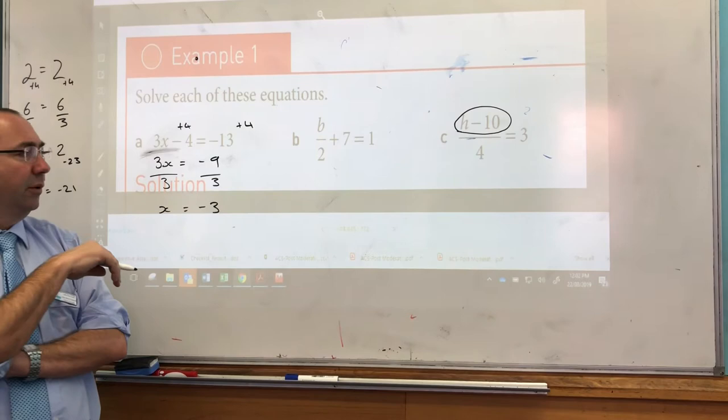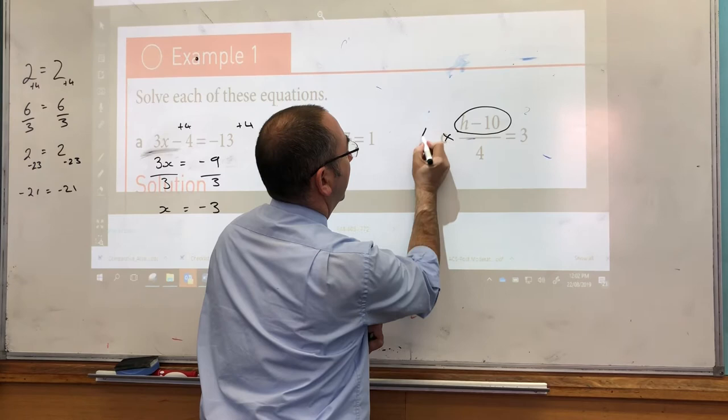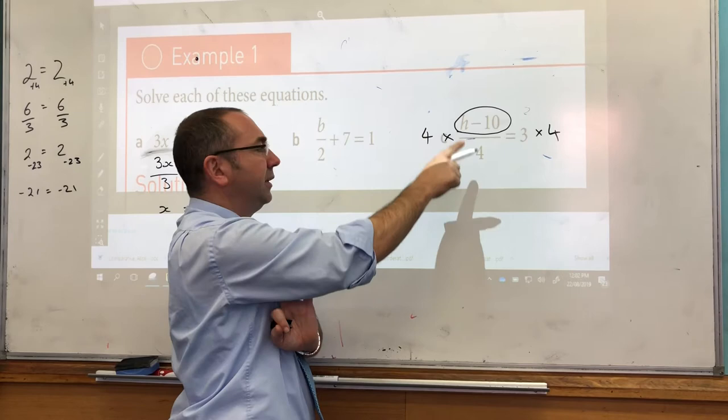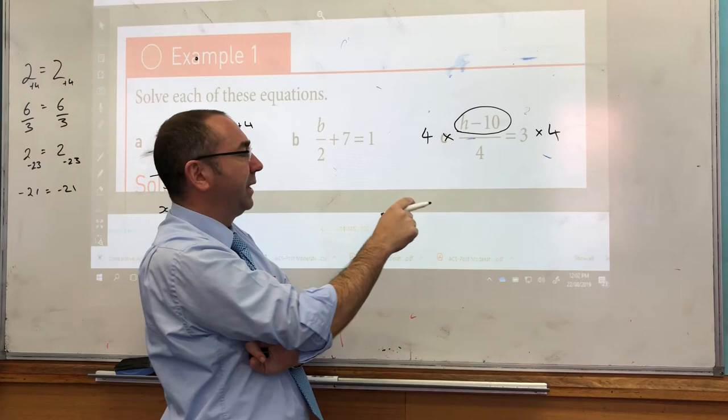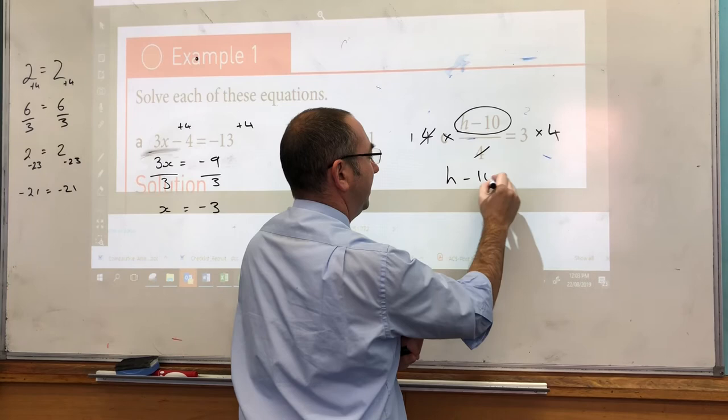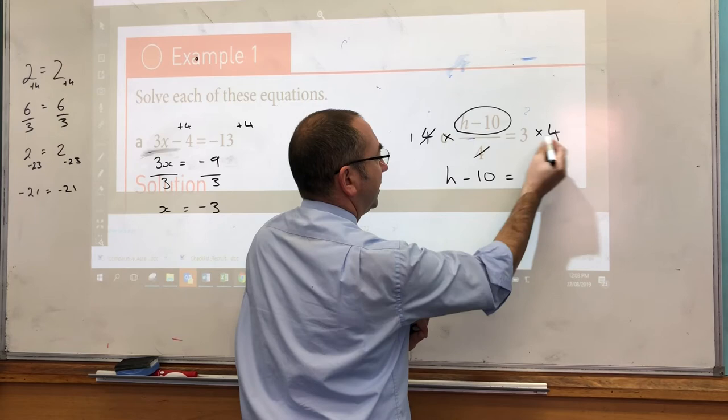So to get rid of that we're going to multiply it by 4, and because we multiply one side by 4 we're going to multiply both sides by 4. Now 4 lots of something divided by 4 just leaves you with something, that's because 4 divided by 4 is equal to 1, so the 4s cancel and that was your design when you multiplied by 4. So here the something was h minus 10, so h minus 10 equals 3 times 4 which is 12.